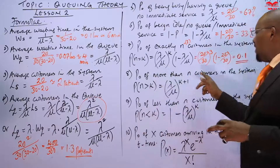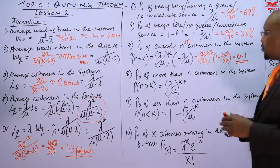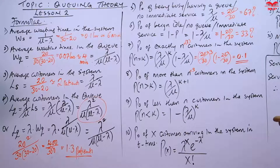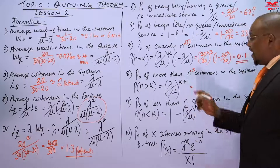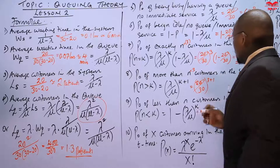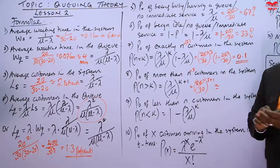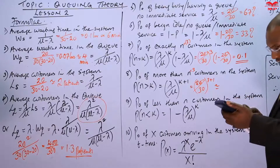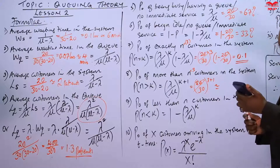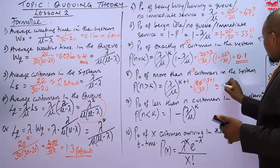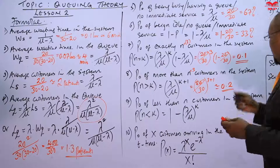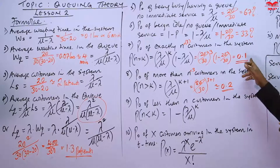The probability of more than N customers in the system — sticking to N equals three, more than three customers — is arrival divided by service raised to the power N plus 1, which is 4. So (20/30) raised to the power 4 gives 0.197, approximately 0.2. So there is a 20% chance of finding more than three customers in the system.